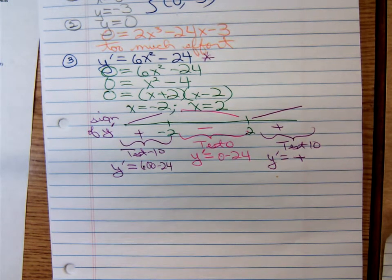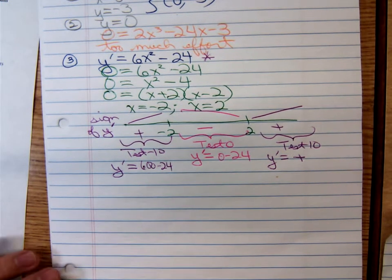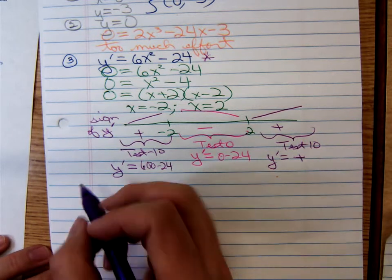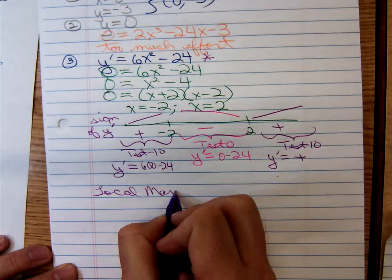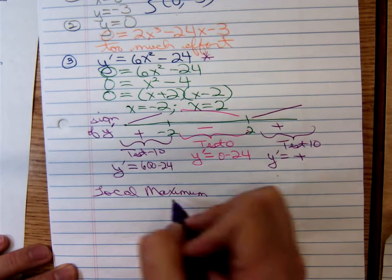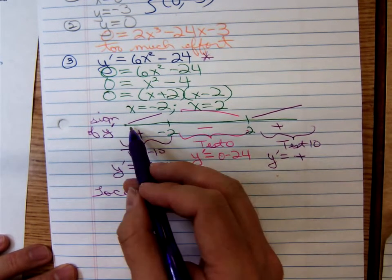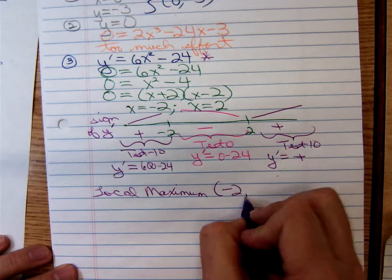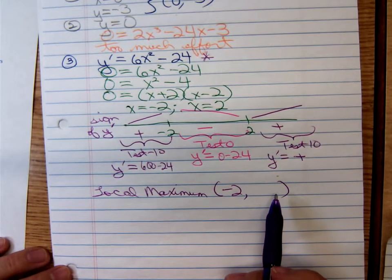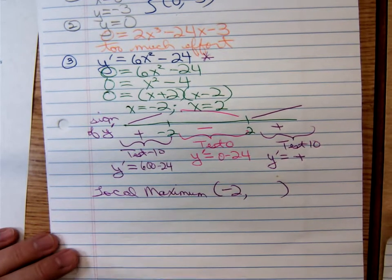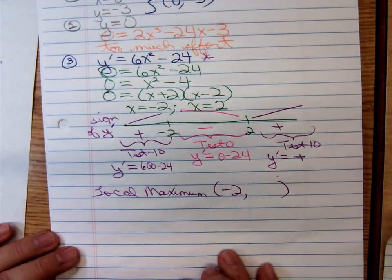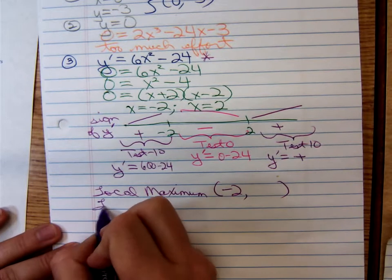So unlike that last one we did, here there will be local extrema. Do we have a local maximum? Yes, where does it occur? At which x value? The local maximum occurs at negative 2, increasing and then decreasing. We're going to have to plot that point in a moment, so we'll need to find the y coordinate. Do we have a local minimum? That occurs at positive 2.